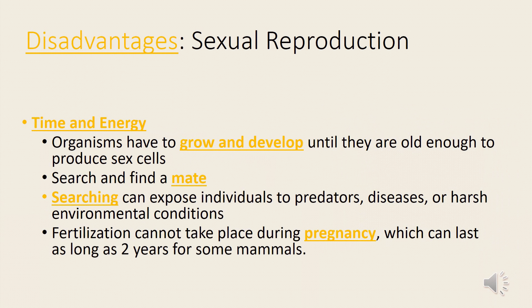Disadvantages of Sexual Reproduction: Time and energy. Organisms have to grow and develop until they are old enough to produce sex cells, then search and find a mate. Searching can expose individuals to predators, diseases, or harsh environmental conditions.